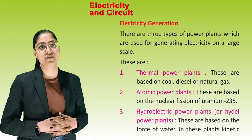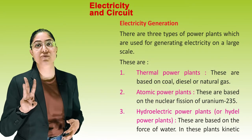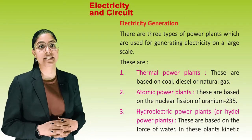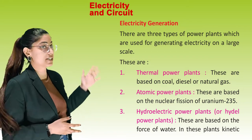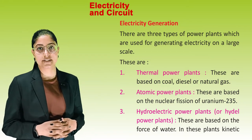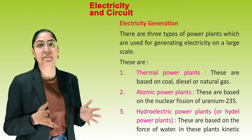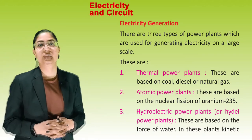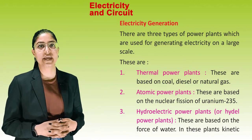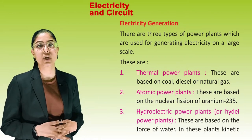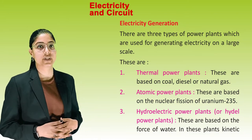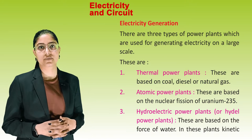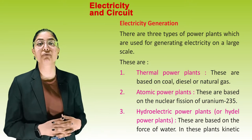Electricity generation. There are three types of power plants used for generating electricity on a large scale. First, thermal power plants, which are based on coal, diesel or natural gas. Second, atomic power plants, which are based on the nuclear fission of uranium-235. Third, hydroelectricity or hydral power plants, which are based on the force of water.